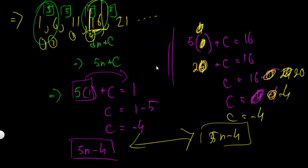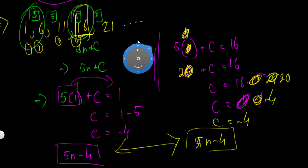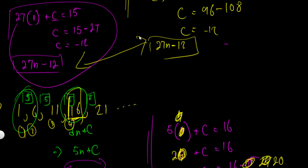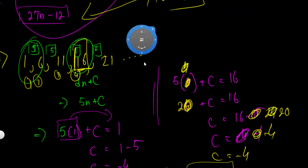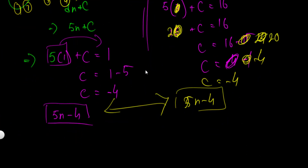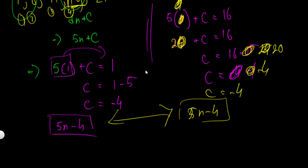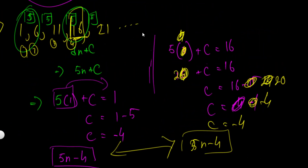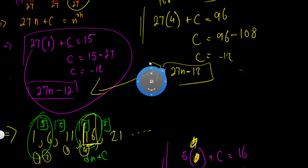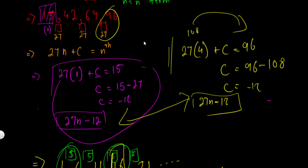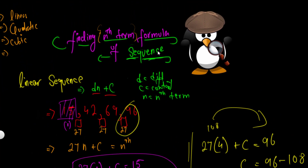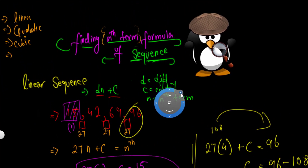The nth term is 5n − 4, the same answer as before. My apologies — I don't use scripts for these videos so I sometimes make silly mistakes. This is a simple, straightforward method for finding the nth term of a linear sequence, which I assume is not difficult for most of you. In the next video we'll try to solve examples of quadratic sequences.